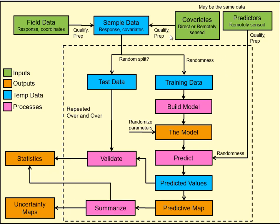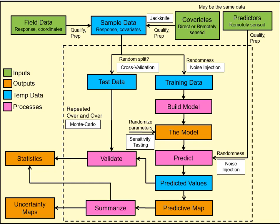We can repeat this process over and over again. Some terminology: a jackknife is where we try all possible combinations of covariates. Cross-validation is where we split the data into two sets. Noise injection is where we inject noise into the predictors, sample data, or model parameters such as the gamma parameter. Repeating this over and over is called Monte Carlo — not Monte Carlo Markov chain, since there is no state machine here.